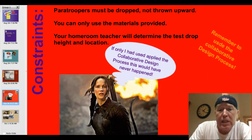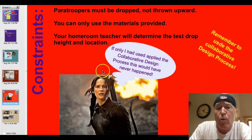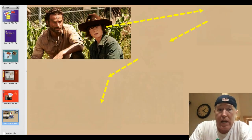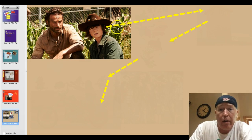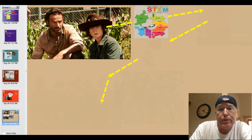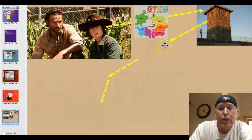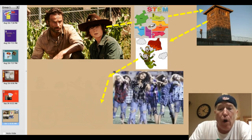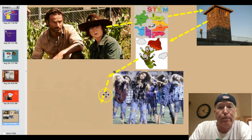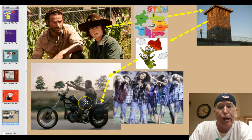If only I had used the collaborative design process, this never would have happened. You know, everybody's using it. I was watching The Walking Dead the other night and I saw this scene: Carl will use Valley Middle School's collaborative design process to build a parachute, climb up to the tower, jump off over the top of the zombies at the high school football game doing the Thriller dance, and onto the back of Daryl's motorcycle. Sorry, it was a late night.